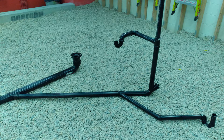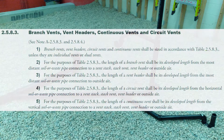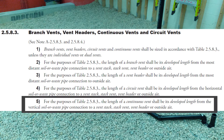For the developed length, we need to look at clause 2583 number five. For the purposes of table 2583, the length of a continuous vent shall be its developed length from the vertical soil or waste pipe connection to a vent stack, stack vent, vent header, or outside air.